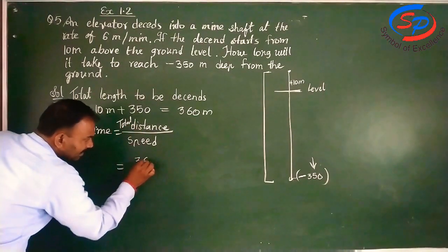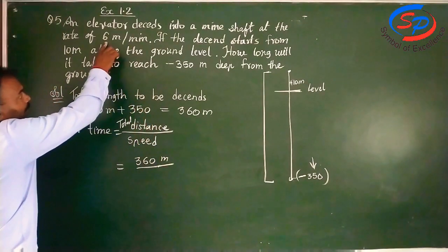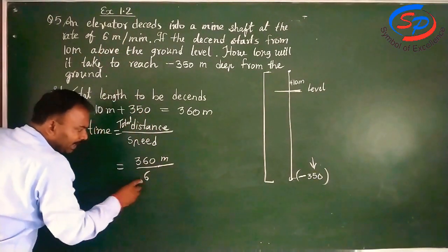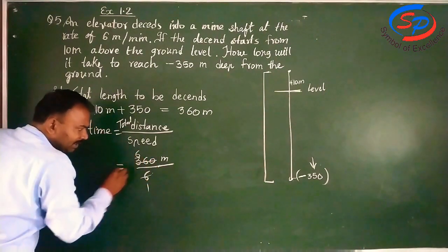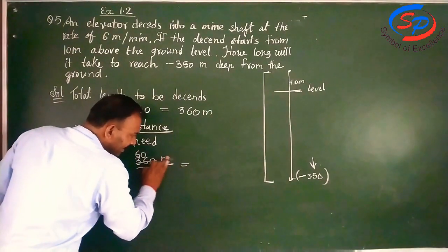So here 360 upon, this is in meter, and if we divide this by 6, how much will we get? Six, six. Six, 36, six, zero. So our total time will be 60 minutes.